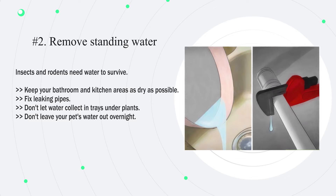Number two: remove standing water. Insects and rodents need water to survive. Keep your bathroom and kitchen areas as dry as possible. Fix leaking pipes, don't let water collect in trays under plants, and don't leave your pet's water out overnight.